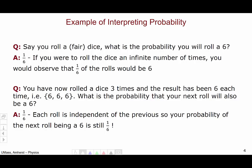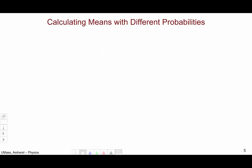Dice don't have memory. They don't remember. So the odds of your next roll being a six are one out of six. Now with this idea of probability, let's move on to thinking about how to calculate means of events with differing probabilities.